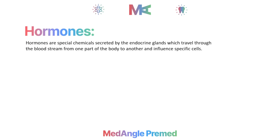Hello everyone. This video discusses hormones, different types of hormones, and their different types of action. Hormones are special chemicals secreted by the body's specific glands or organs, called endocrine glands. Hormones are directly secreted into the blood and travel to other parts of the body, where they affect or influence specific cells called target cells.